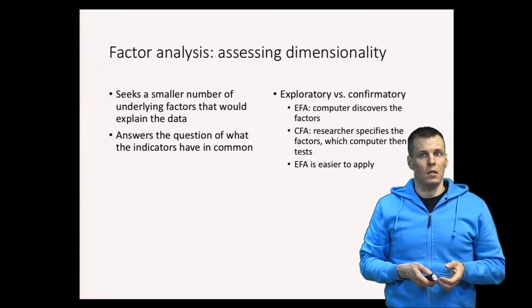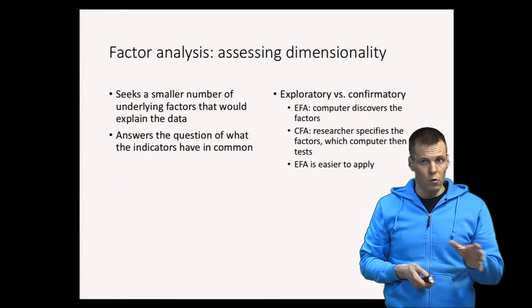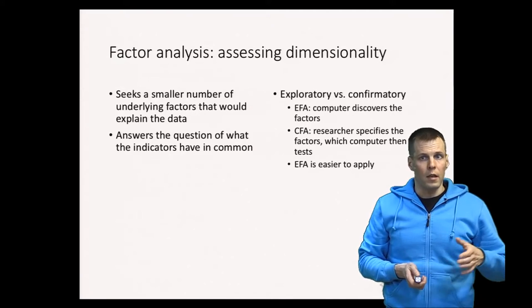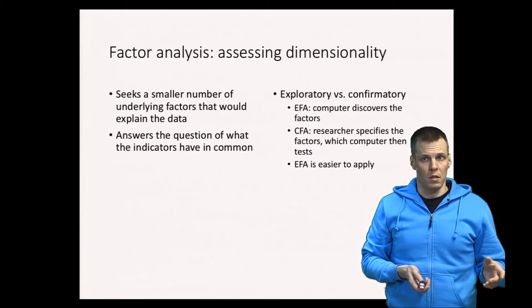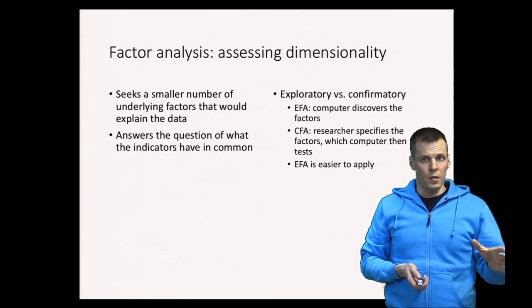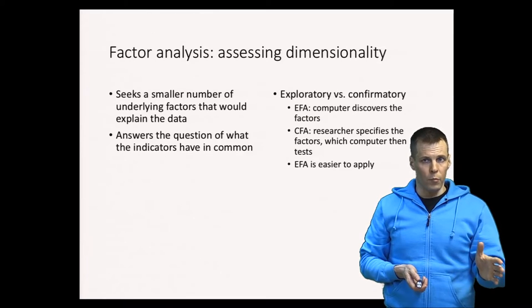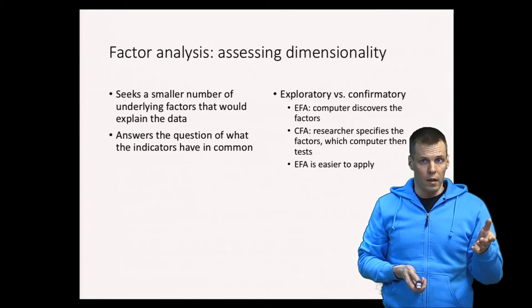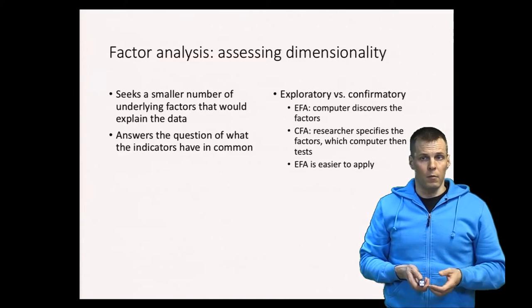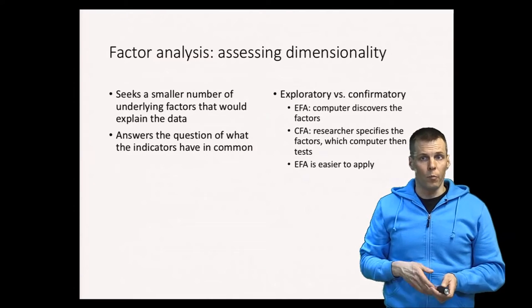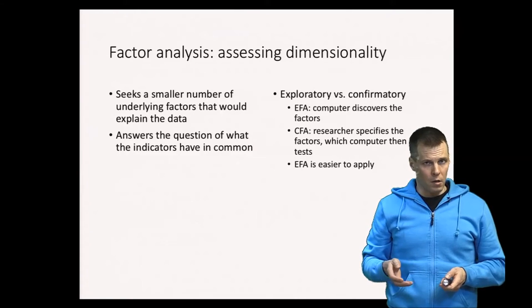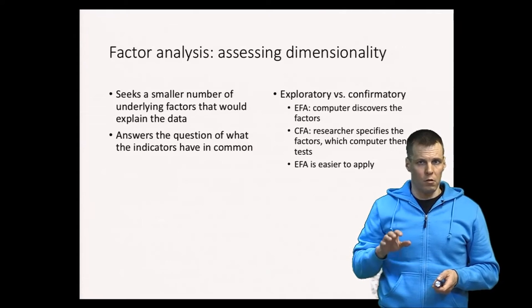There are two main variants of factor analysis techniques: exploratory factor analysis and confirmatory factor analysis. In exploratory factor analysis, it's an exploratory process where you give the computer your dataset and ask the computer to give you two, three, or however many factors you want from the data, and then the computer will identify the factors. In confirmatory factor analysis, you specify the factor structure yourself.